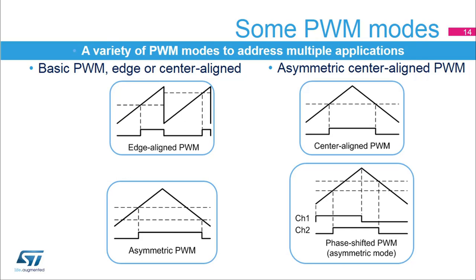In center aligned mode, the rising and falling edges are not synchronized with the counter rollover, so that switching time varies with the duty cycle value. This is achieved by programming the counter in up-down mode. This mode spreads the switching noise when multiple PWMs are generated with the same timer, and is a key feature for three-phase PWM generation, doubling the frequency of the current ripple for a given switching frequency. For instance, a 10 kHz PWM will generate inaudible 20 kHz current ripple. A variant is the asymmetric PWM mode, where two compare registers define the turning on and off of the PWM signal, providing higher resolution for pulse width setting.